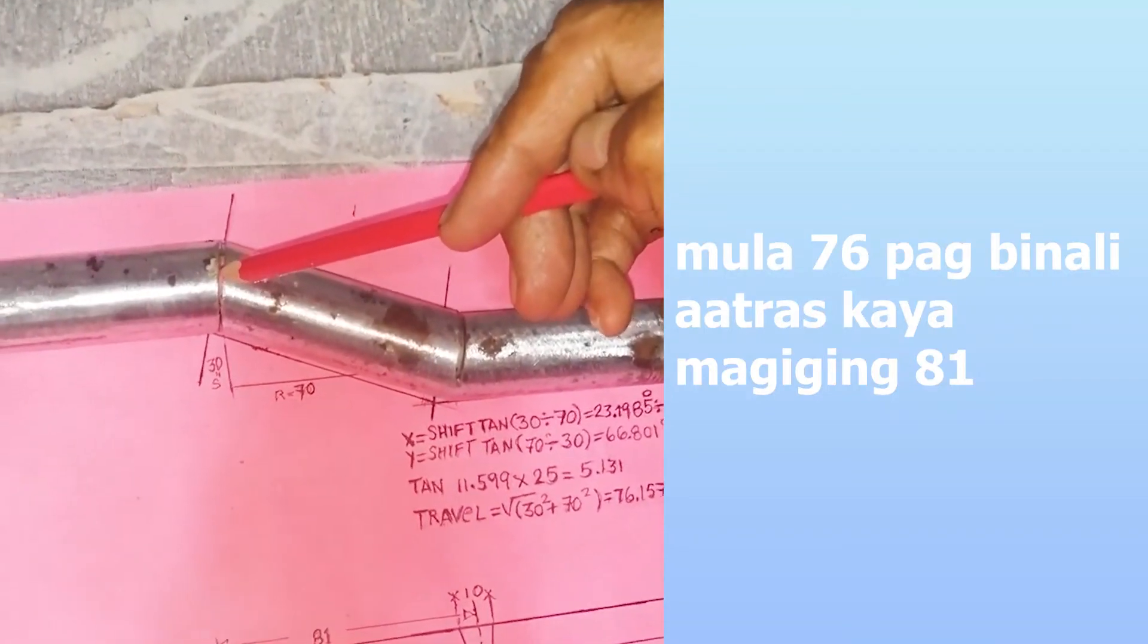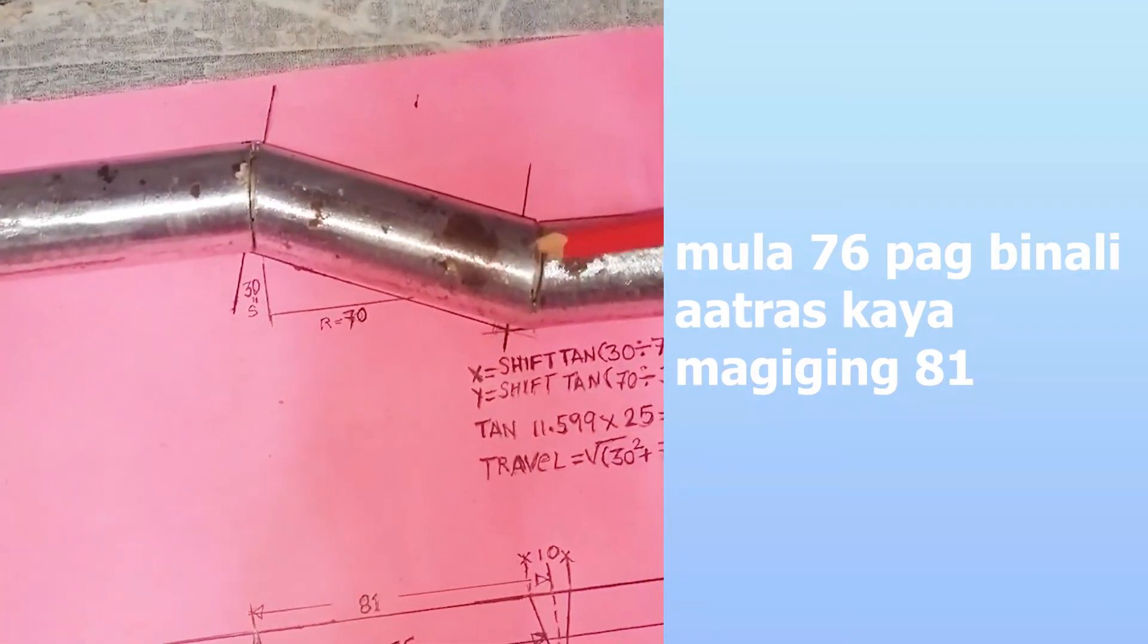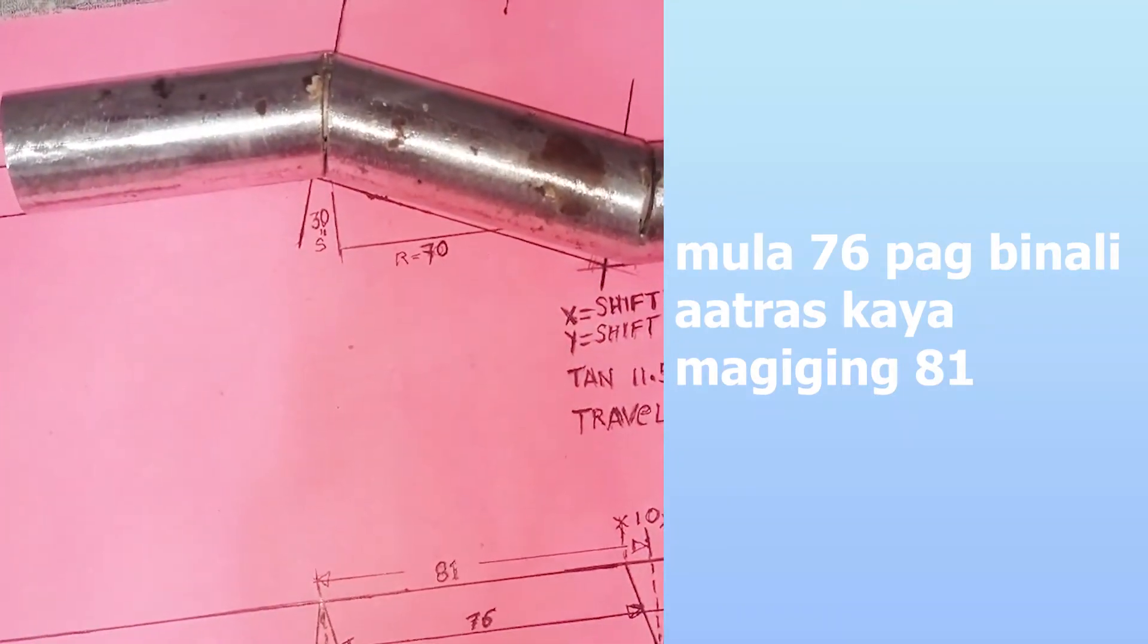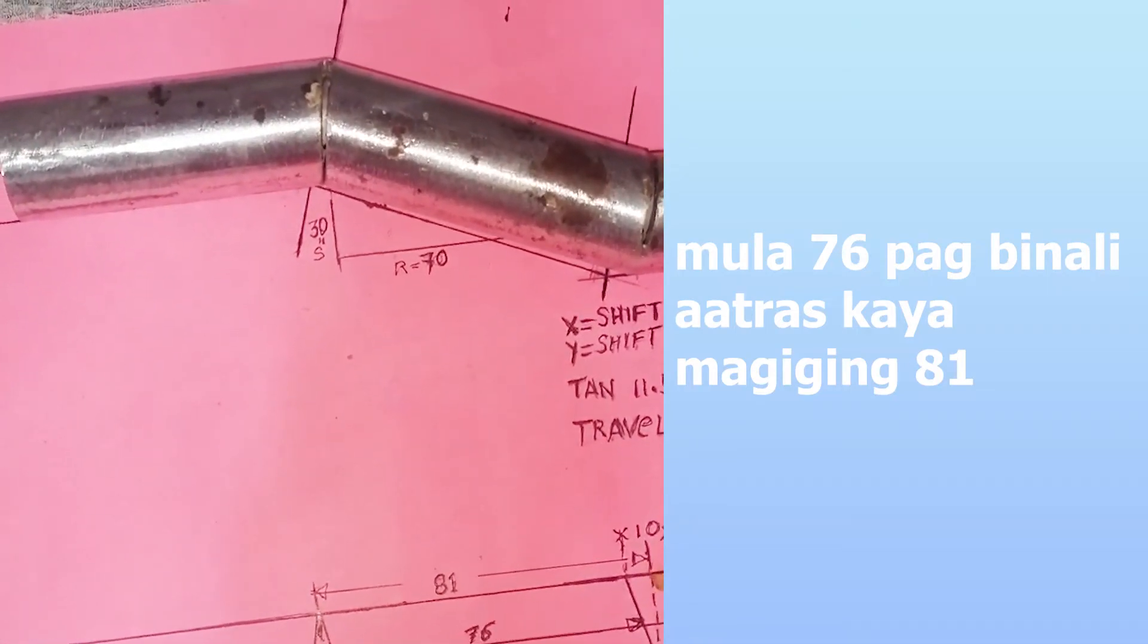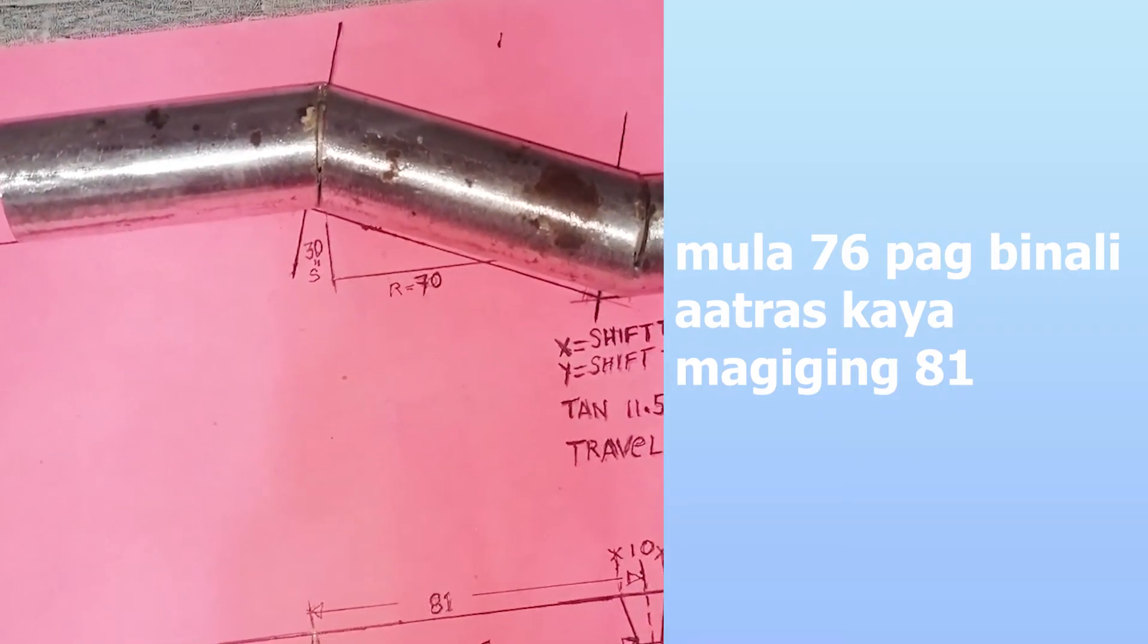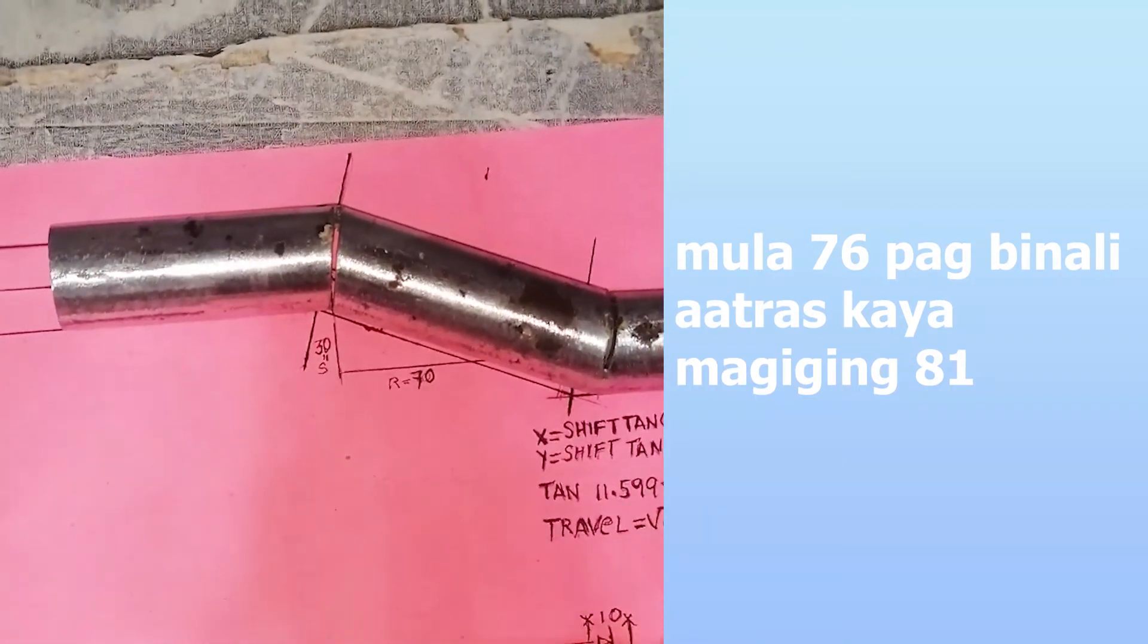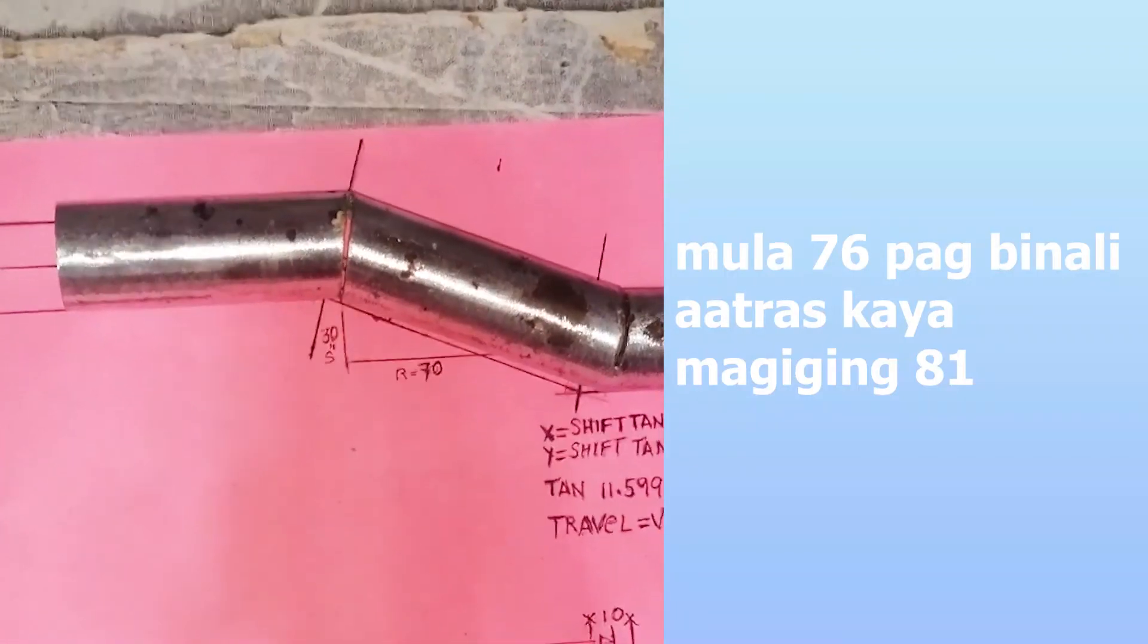Yung magmula rito sa sentro na to, yung travel niya hanggang dito, 76 na kuha mo. Kasi kaya 81 yun, pag binali mo, aatras yun, mag-a-annucer dito, magtatagpo sila dito. Kasi ito kasing gap na to, 2.5 tsaka sa kabila 2.5, pag pinagbali, pag binagdikit mo, magiging malalago dito sa 81.